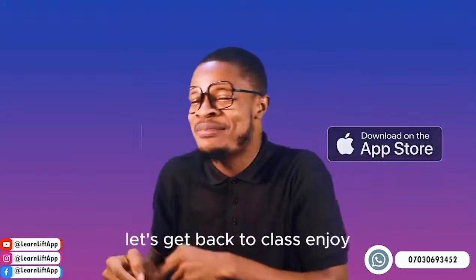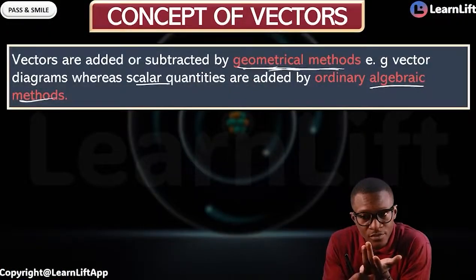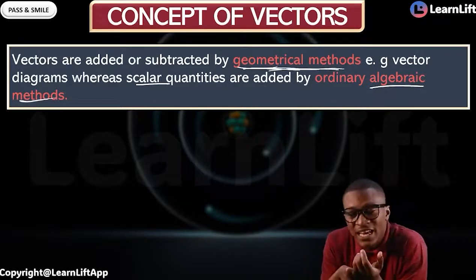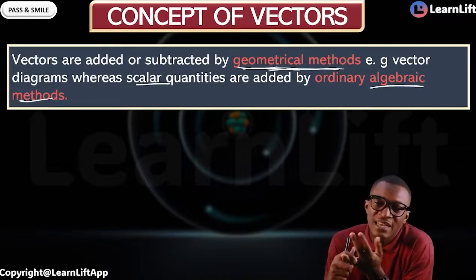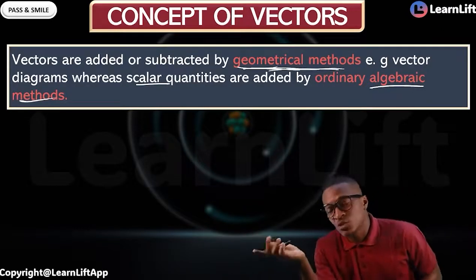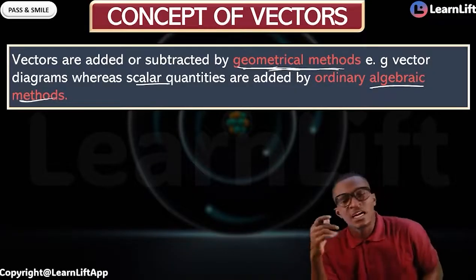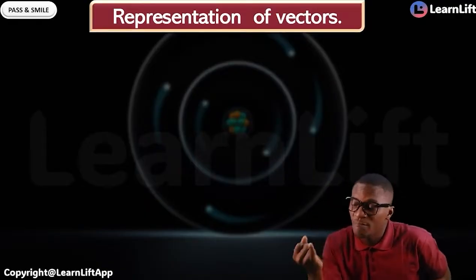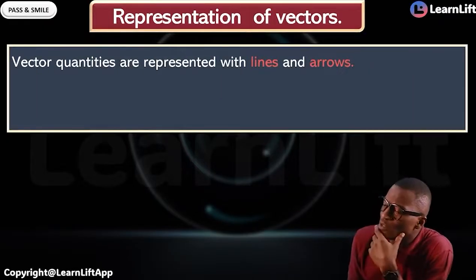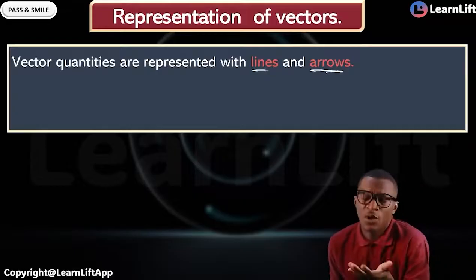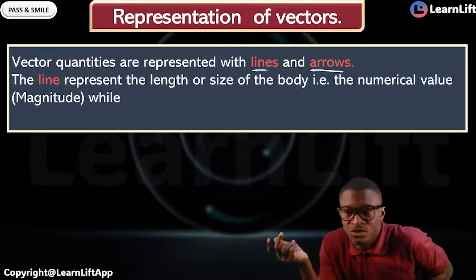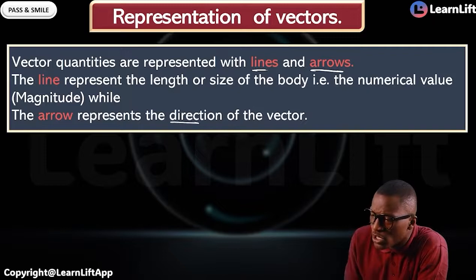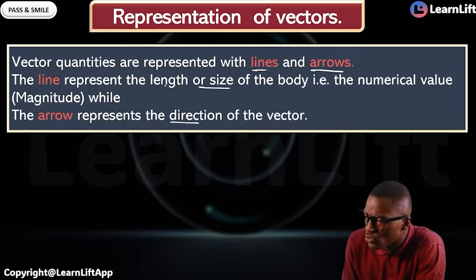So to summarize: scalars have magnitude but no direction. Vectors have magnitude and direction. Scalars can be added by ordinary algebraic method, but vectors can be added by geometric method — such as Pythagoras' theorem, sine rule, cosine rule, and so on. Now, how do you represent vectors? Vectors can be represented with lines and arrows. The line represents the magnitude or size, and the arrow represents the direction.